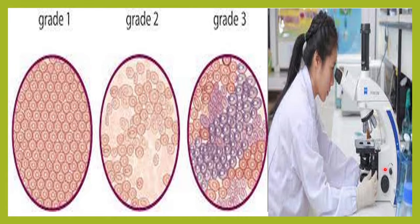Grade is determined from tissue examined under a microscope. Grade 1 is well differentiated — tumor cells multiply slowly. Grade 2 is moderately differentiated. Grade 3 is poorly differentiated — these cancer cells multiply more rapidly.